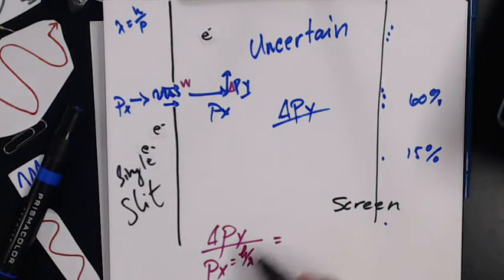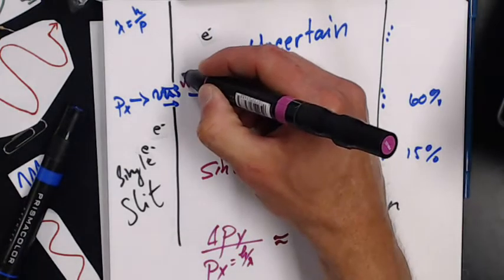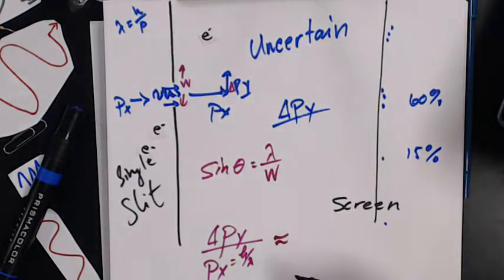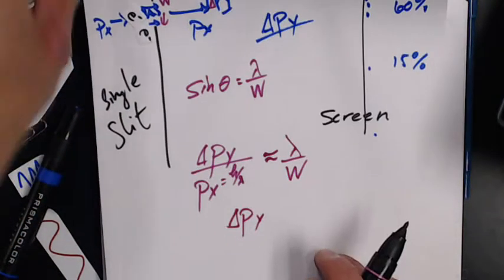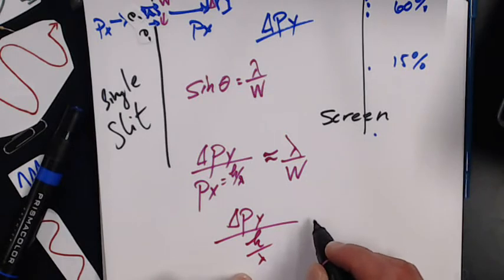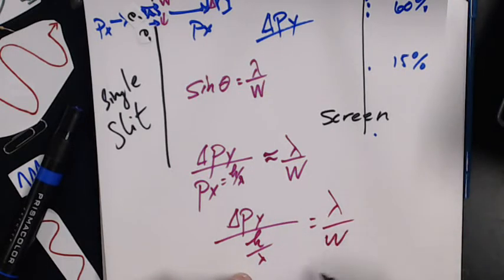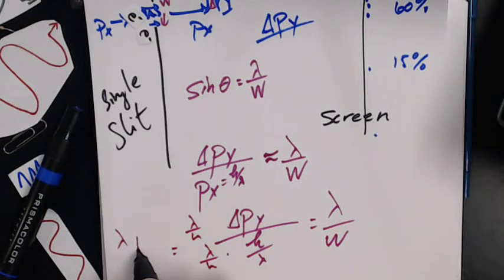Turns out it's going to depend on sine theta, which is lambda over w, whatever my slit width is, lambda over w. It's related pretty closely to that angle, so I can just shove it in there. I end up with delta py over h lambda equals lambda over w. Do some math here, this turns into lambda delta py over h equals lambda over w. The lambdas cancel out, so now it doesn't matter what kind of wave I send through.